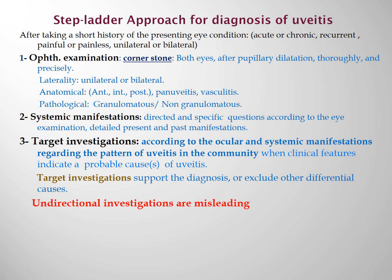Sometimes the diagnosis of uveitis can be concluded in this first step — for example, in Fuchs uveitis cyclitis. But if the diagnosis is not reached by this step, we go to the next, second step, which is systemic manifestations, present and past.